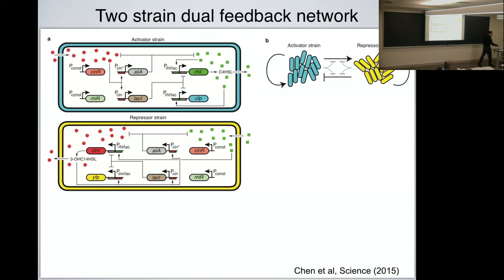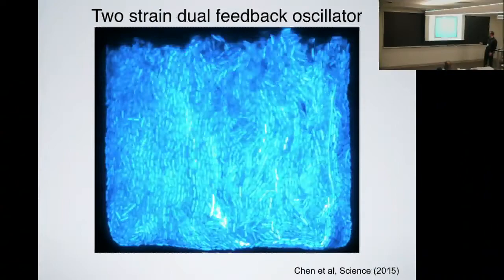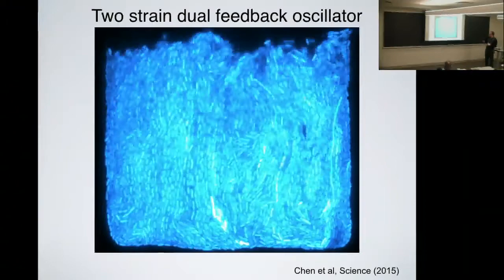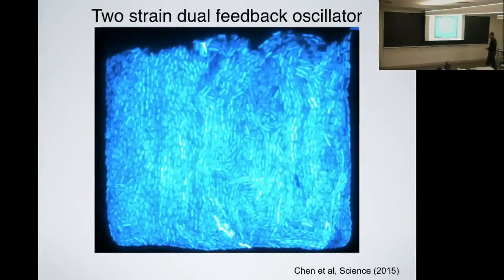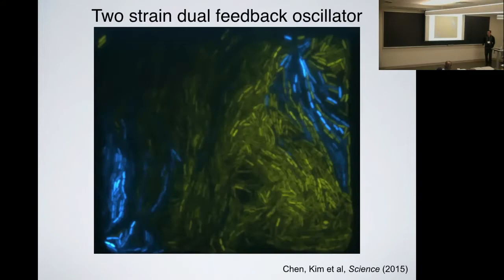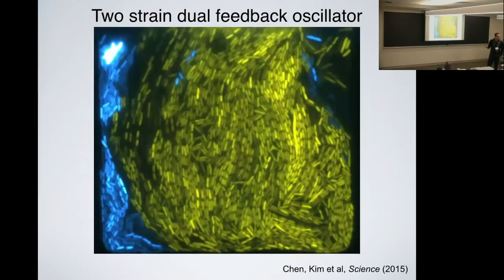If you grow the activator strain on its own in a microfluidic trap — forcing E. coli to grow in a two-dimensional sheet — you don't see anything interesting, because it just activates itself, the loop is not closed. But if you co-culture the two strains together, you close the loop, and the communication between the activator strain and the repressor strain causes them to oscillate.